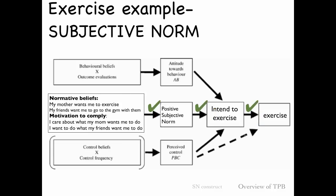Looking at positive subjective norms: a normative belief might be that your mother wants you to exercise, and you care very much what your mother wants — so you're highly motivated to comply. Another positive example is your friends expecting you to go to the gym with them, and you really want to do what your friends want. They're expecting you at the gym and you really want to be there, so you're likely to intend to exercise and therefore exercise.